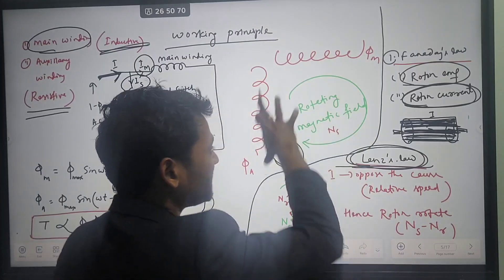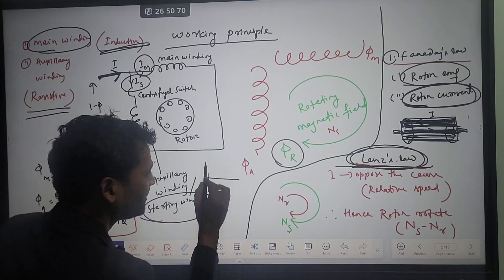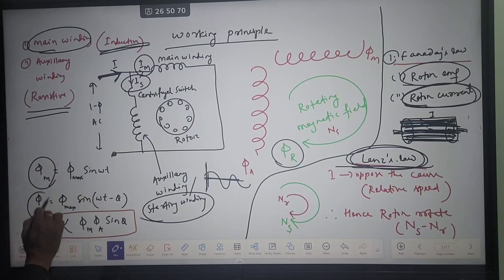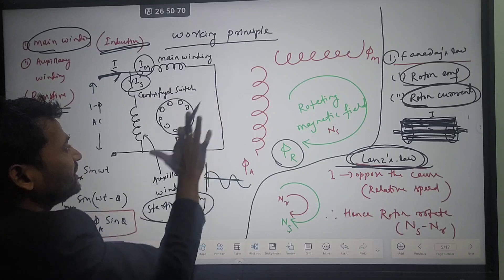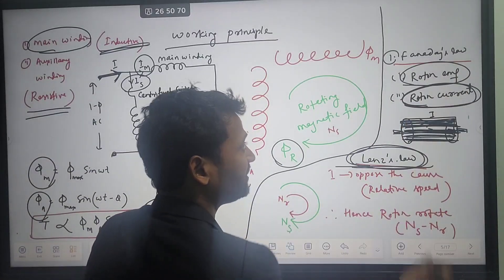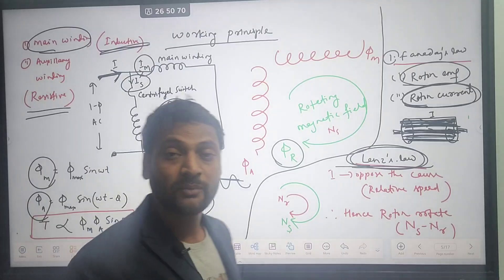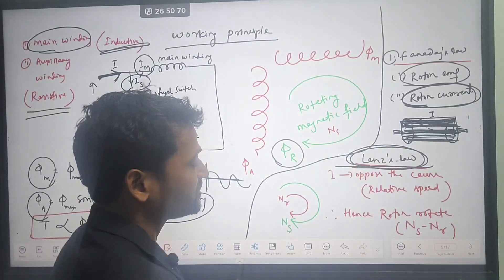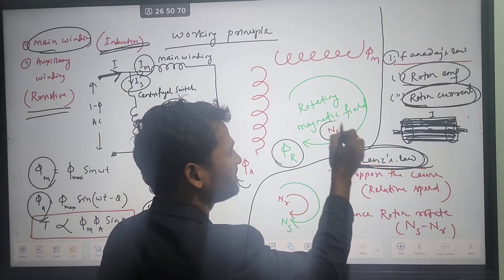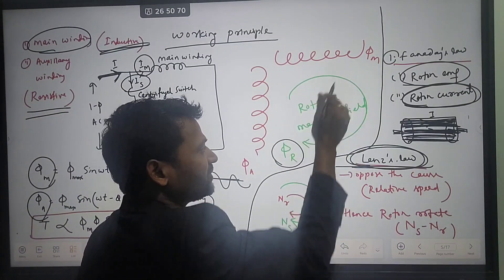The principle of the single-phase induction motor is based on two laws: Faraday's law and Lenz's law. As per Faraday's law, EMF is induced in the rotor due to the change in magnetic field. When single-phase AC supply is given — which is sinusoidal in nature — two magnetic fluxes are developed: phi_m and phi. The resultant magnetic field revolves, and the rotor inside gets EMF. As per Lenz's law, the induced current opposes the cause — meaning it opposes the relative speed. Initially the rotor is at rest, so the relative speed is maximum, equal to Ns.